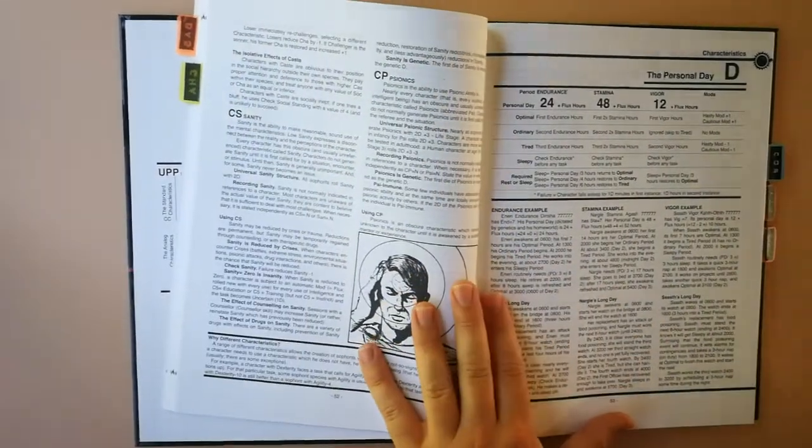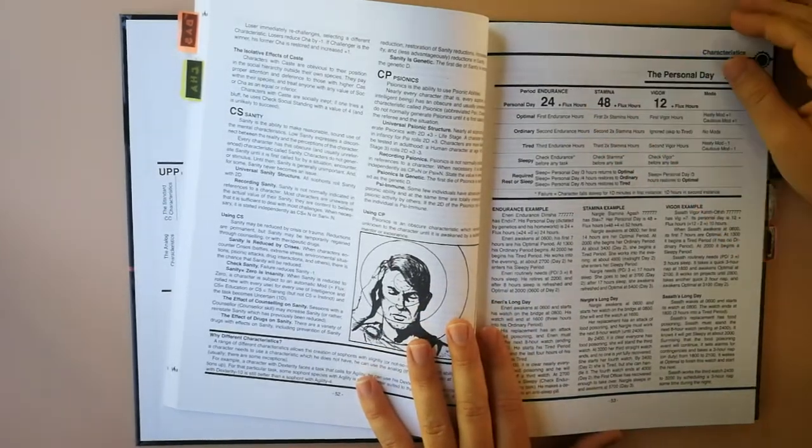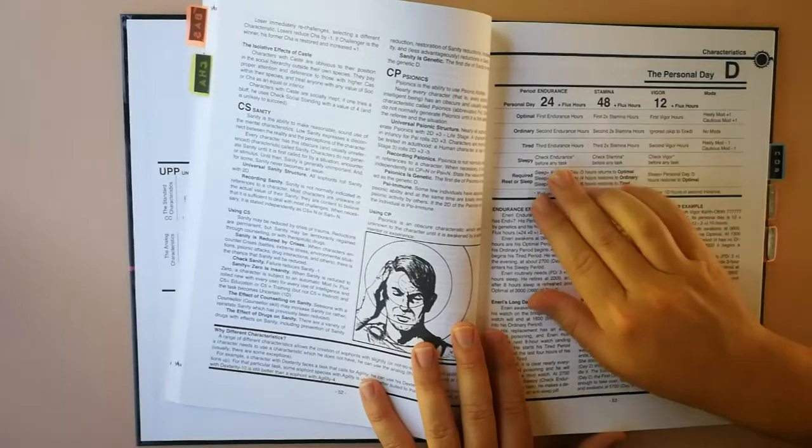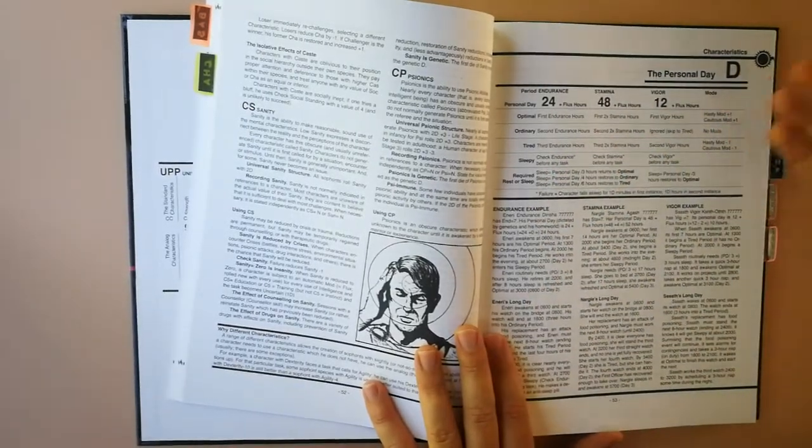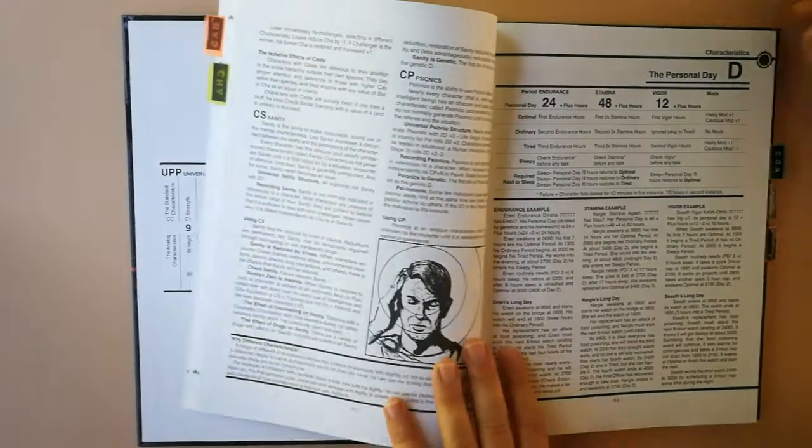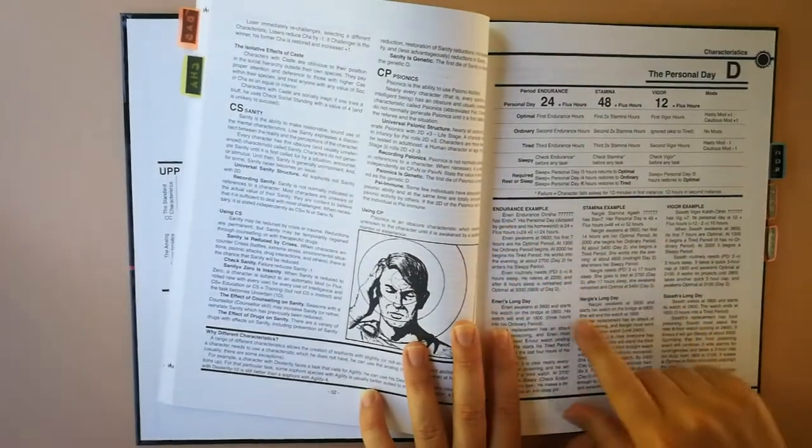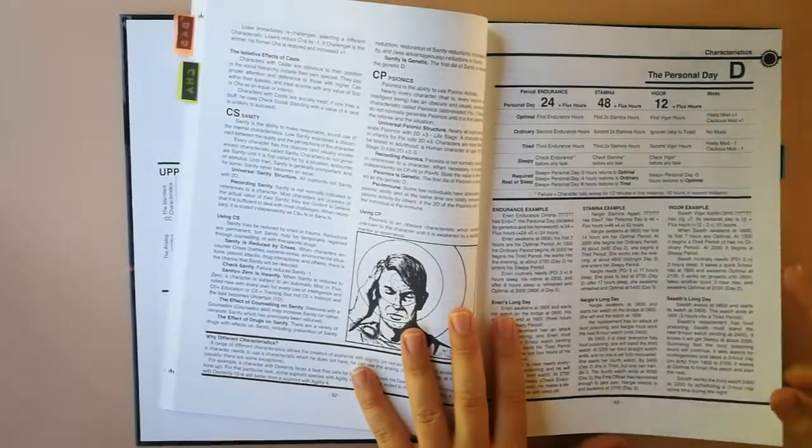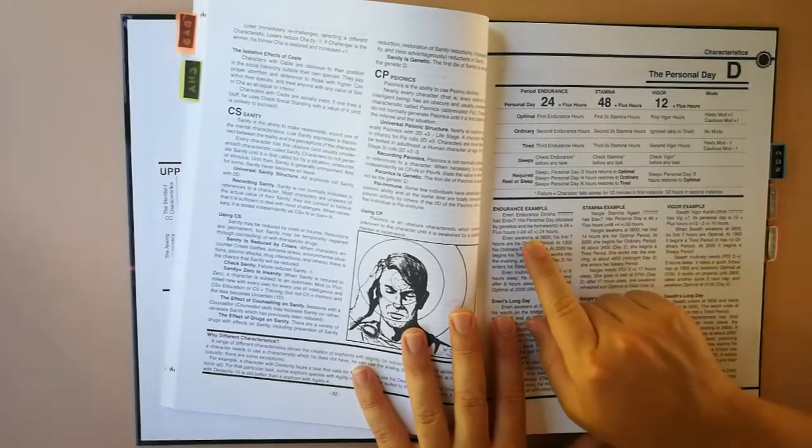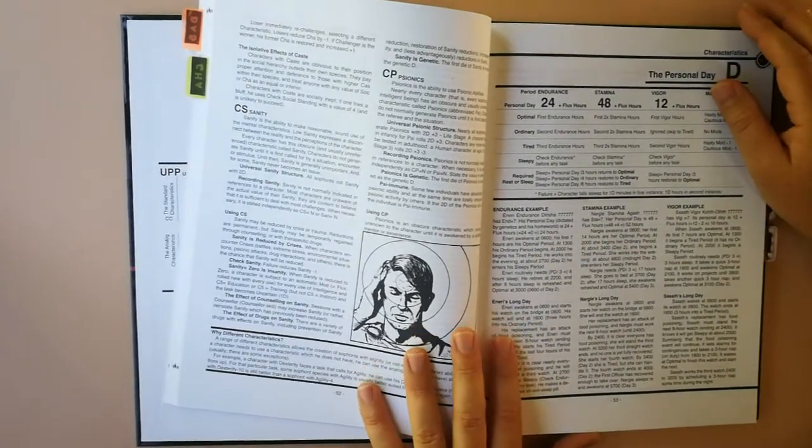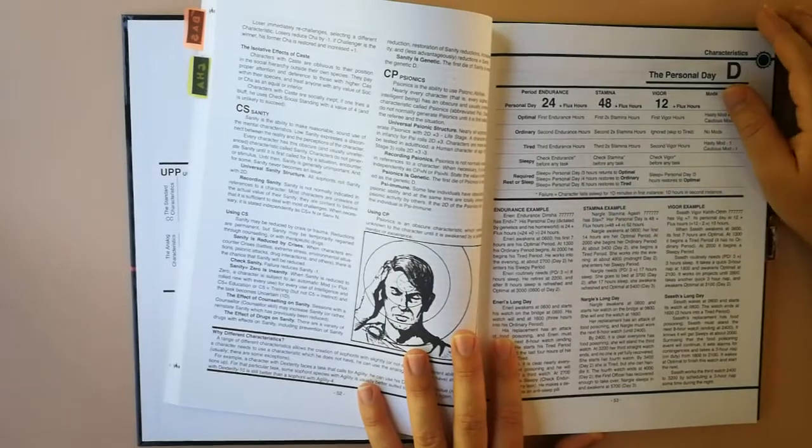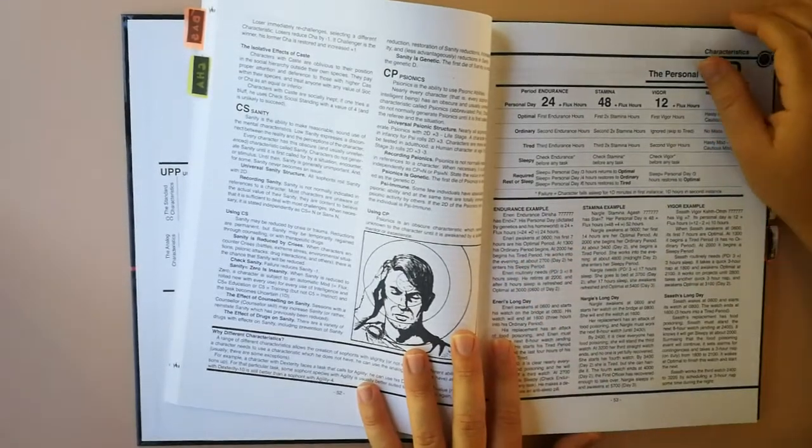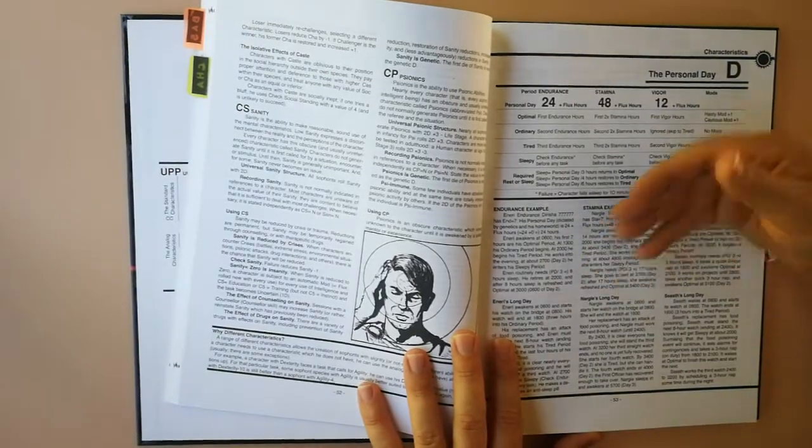The personal day. Over a period of 24 plus flux hours, or over 48 plus flux hours, one's endurance and stamina or vigor fluctuate. For example, Aneri Dinsha 7777 has endurance of 7. His personal day is 24 plus flux hours. Awakening at 0600, his first 7 hours are his optimal period. At 1300 his ordinary period begins. Later he becomes tired, and later he becomes sleepy.